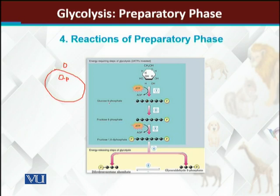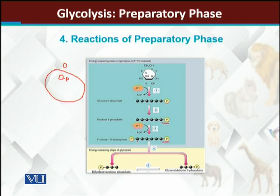Glucose-6-phosphate is converted into fructose-6-phosphate — glucose اور fructose دونوں 6-carbon carbohydrates ہیں۔ یہ ایک isomerization ہوگی — glucose سے fructose میں convert ہو جائے گا۔ Glucose ایک aldose sugar ہے جبکہ fructose ایک keto sugar ہے۔ پھر third step میں fructose-6-phosphate is converted into fructose-1,6-bisphosphate۔ Position number 6 پر already phosphate group موجود تھا جبکہ carbon number 1 پر ATP سے ایک اور phosphate group add ہوتا ہے۔ Fourth step میں یہ 6-carbon molecule fructose-1,6-bisphosphate breaks down into two 3-carbon molecules۔